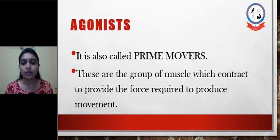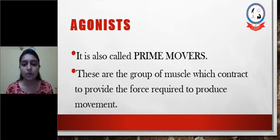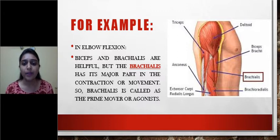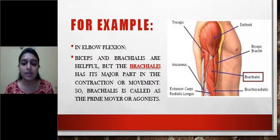Agonists are also called prime movers. They are the group of muscles which contract to provide the force required to produce movement. For example, in elbow flexion, biceps and brachialis both are involved. But brachialis has the major part to play in the contraction or movement of elbow flexion, so brachialis is called the prime mover or agonist.